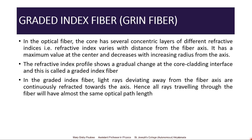The next type of fiber is the graded index fiber. Here, the core has several concentric layers of different refractive indices — that is, the refractive index varies with distance from the fiber axis. It has a maximum value at the center and decreases with increasing radius from the axis. The refractive index profile shows a gradual change at the core-cladding interface, hence it is called a graded index fiber.